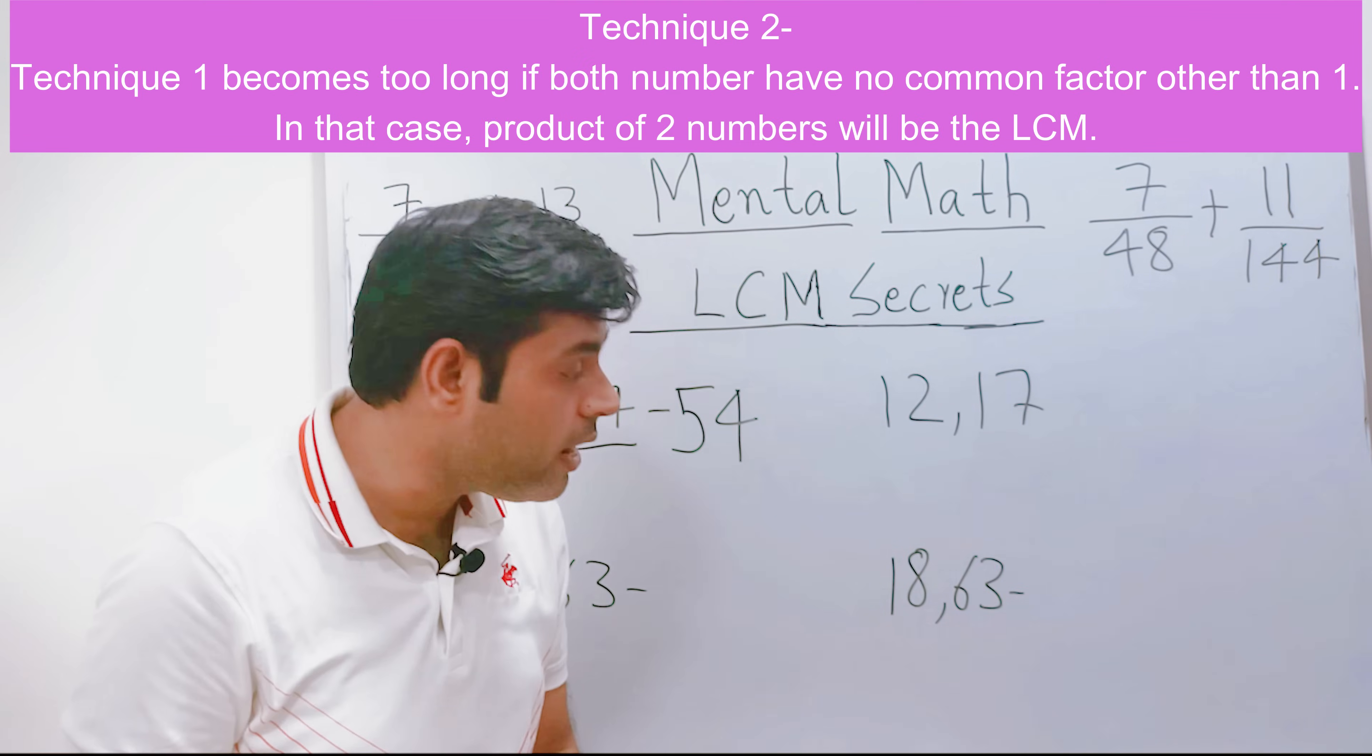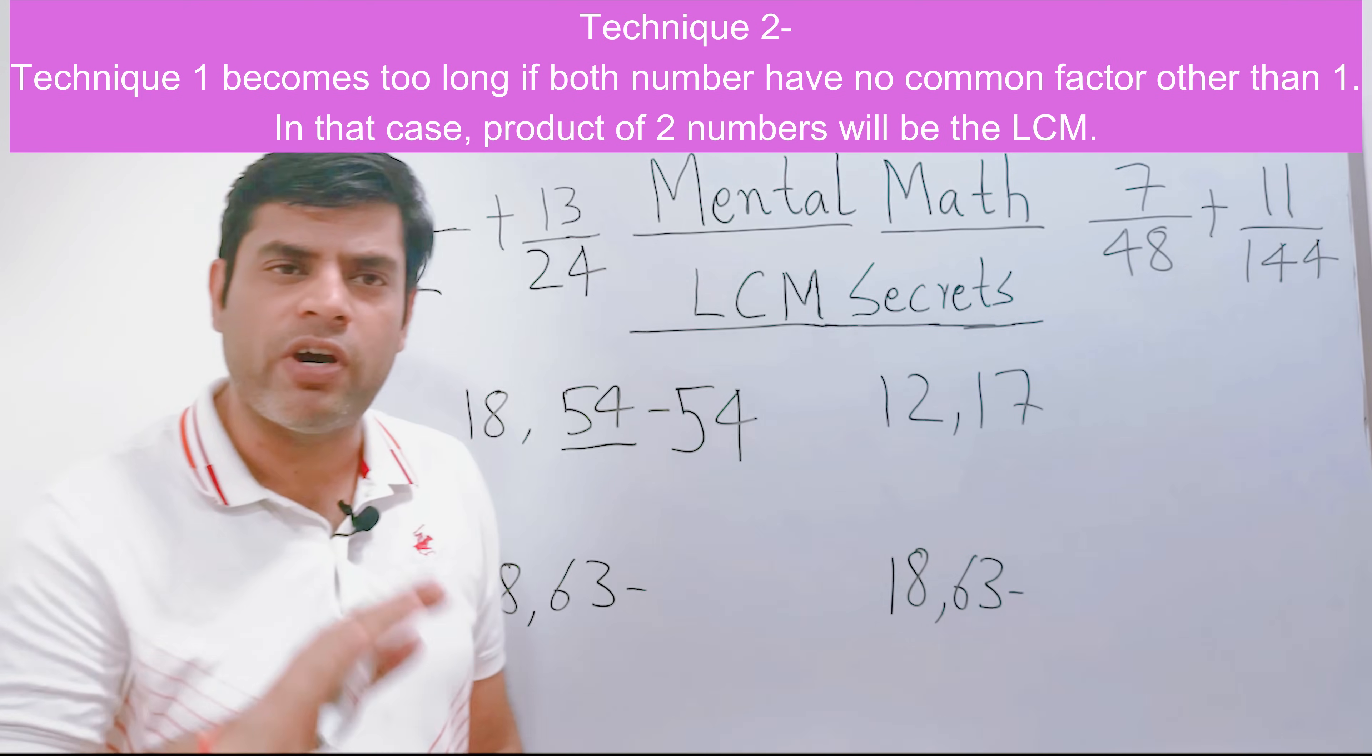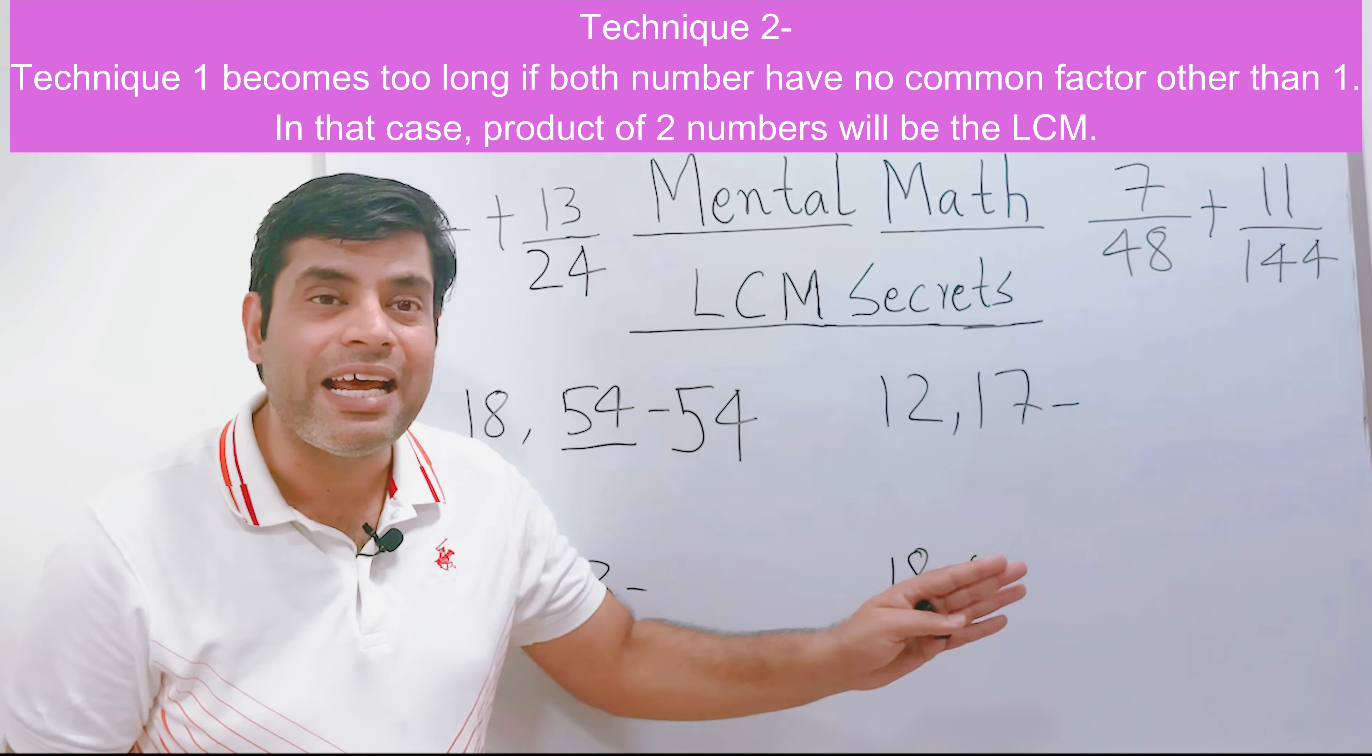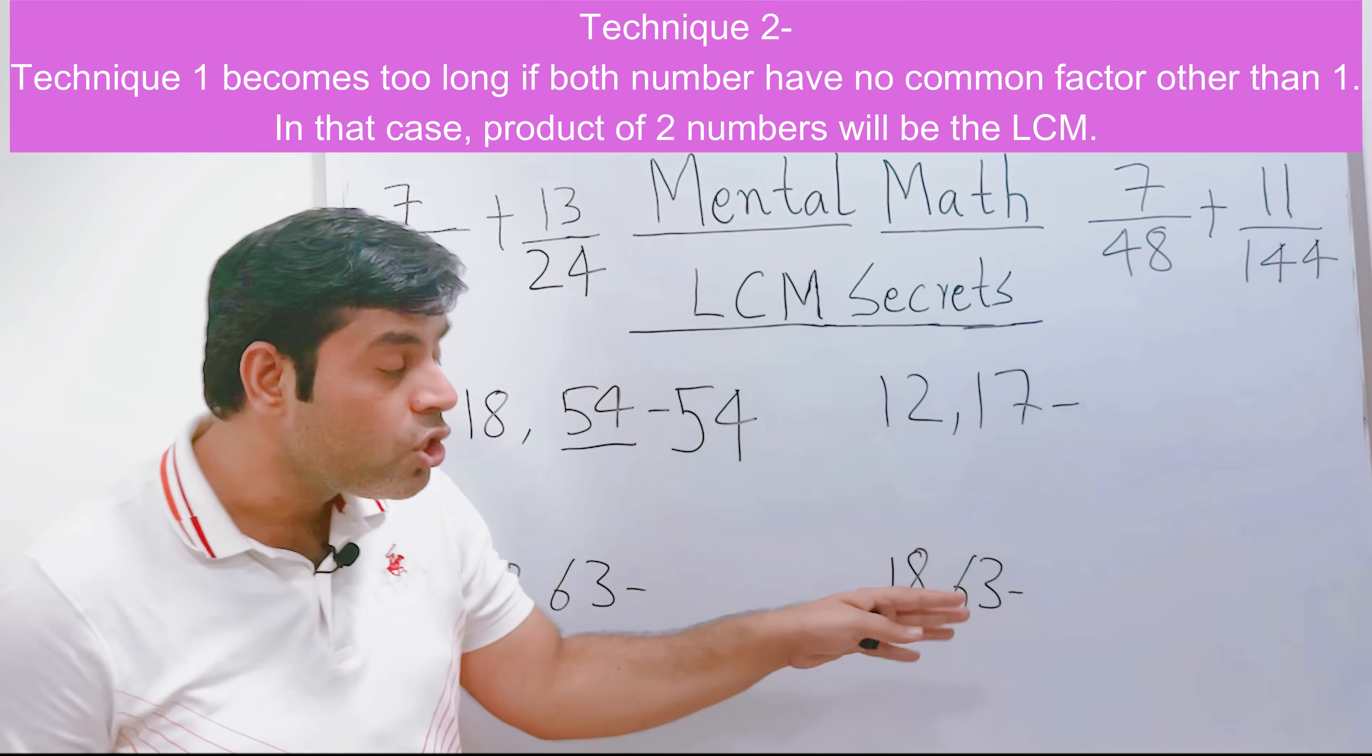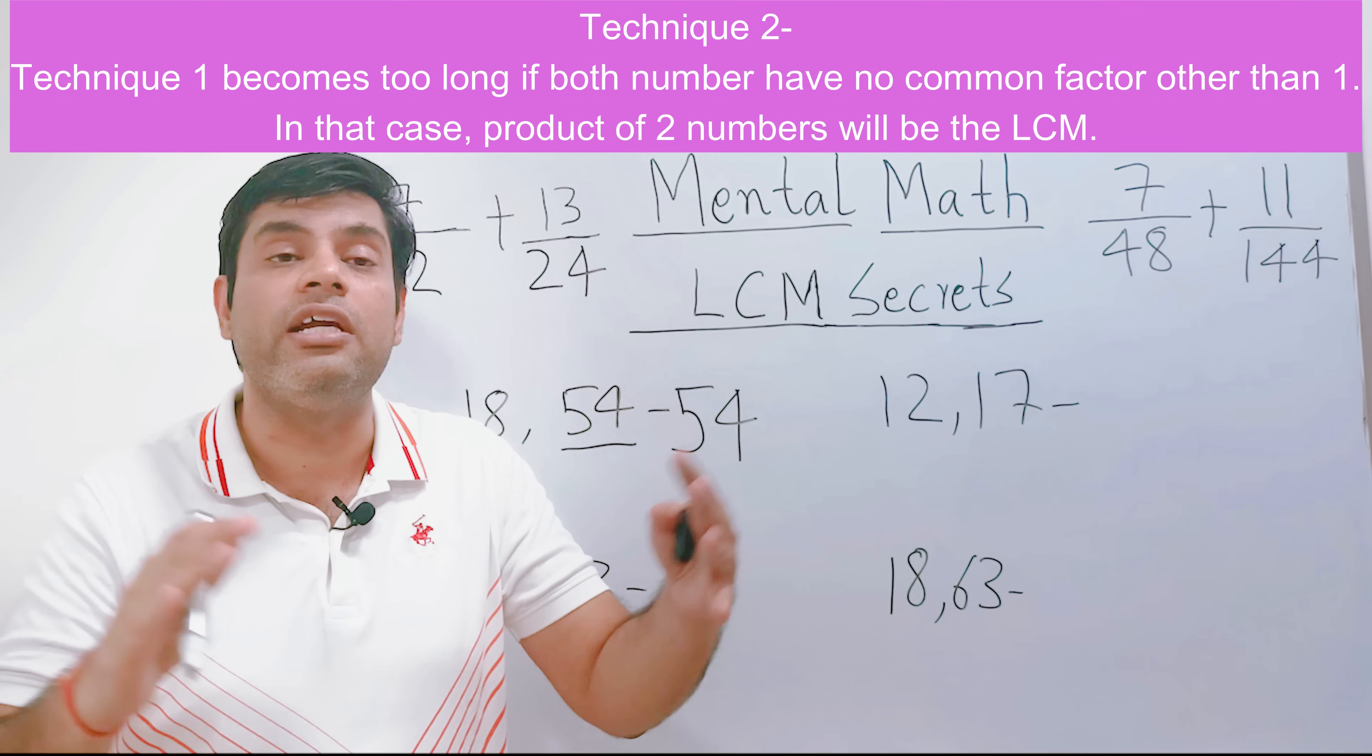Sometimes you may not be that lucky. In this question, we will use a different technique. You see the two numbers. If you don't see any relation, no common factor of course except one, because one is a common factor for every number in the world. The question is whether apart from one is there any other common factor?